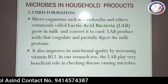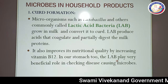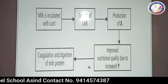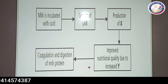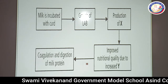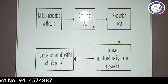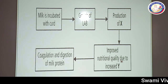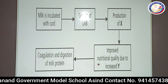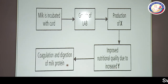Lactic acid bacteria produce acids that coagulate and partially digest the milk proteins. It also improves nutritional quality by increasing vitamin B12. In our stomach, LAB also plays a very beneficial role in checking disease-causing microbes. Curd is more beneficial than milk because it contains vitamin B12 and its protein is semi-digested. In the diagram of curd formation: milk is incubated, lactic acid bacteria grow, product X (lactic acid) is produced, and nutritional quality improves due to increase in Y (vitamin B12).